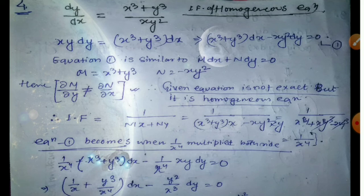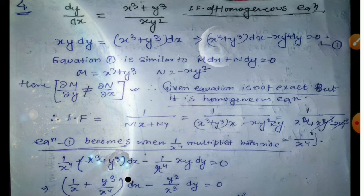Here we have to work on this equation. It is not equal to dN/dx, so this equation doesn't satisfy the exact condition. We have to find the integrating factor. To find the integrating factor: find 1/(Mx + Ny), then find M and N. Integrating factor: 1/(y·x⁴) or xy³. After identifying xy³, multiply by the integrating factor. So: (1/x + y³/x⁴) dx minus (y²/x³) dy equals zero.